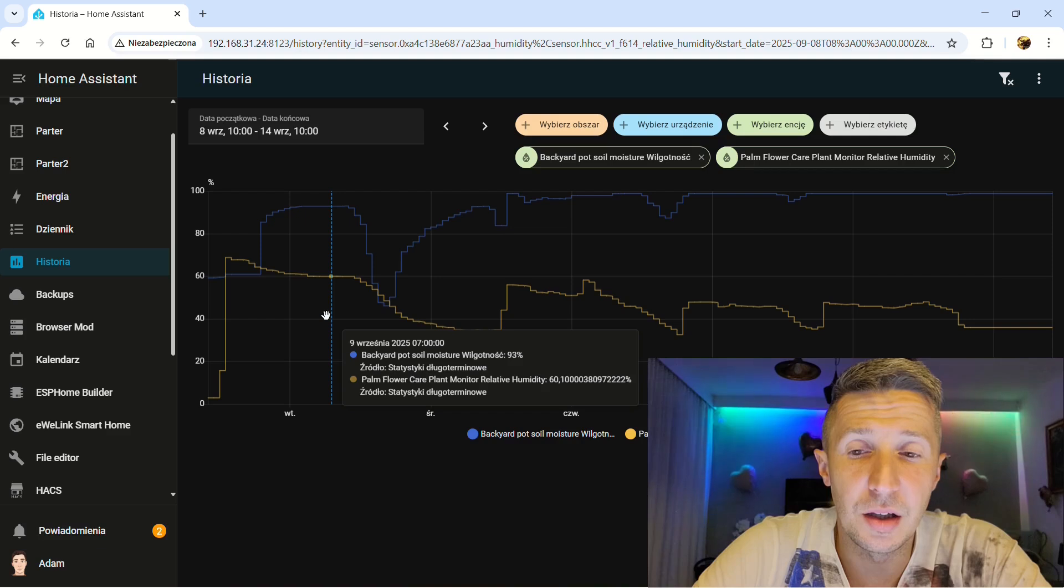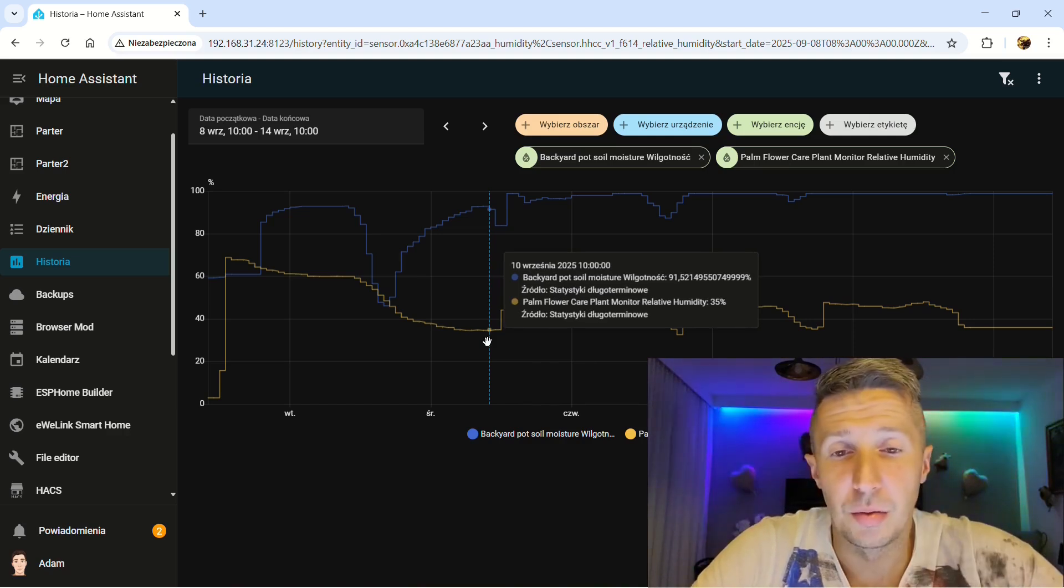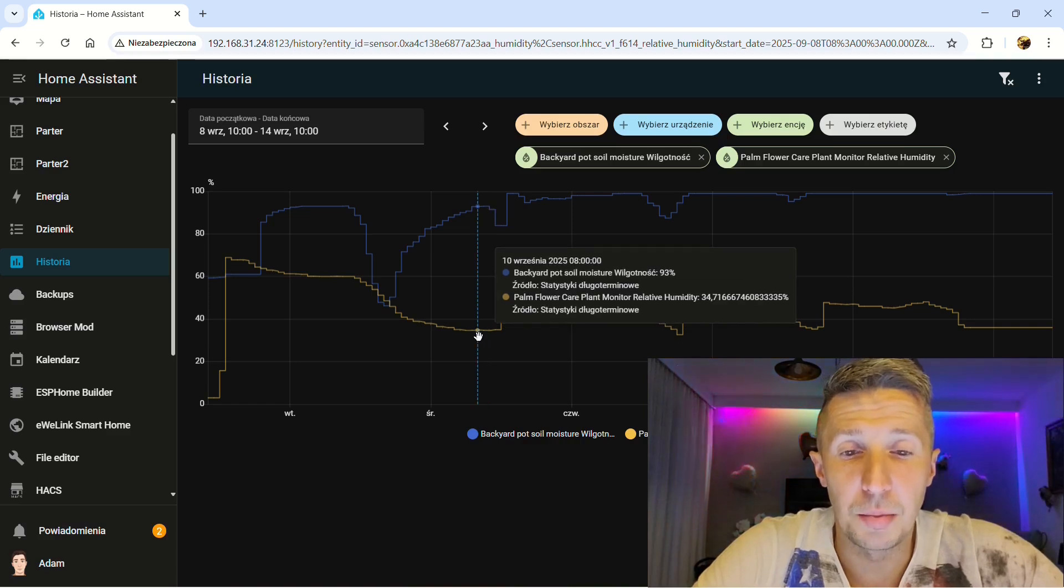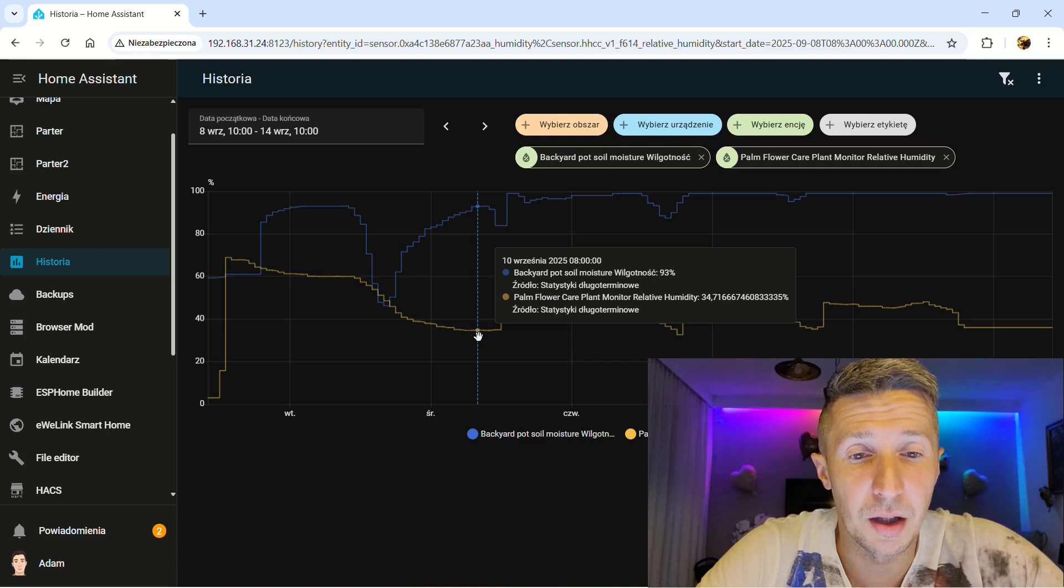And I managed somehow to get those readings. You can see that the readings were quite high. So even when it was really getting dry, you can see that Mi Flora went up to below 40. But for some reason in the new sensor, the readings were growing. I was not sure what's happening.